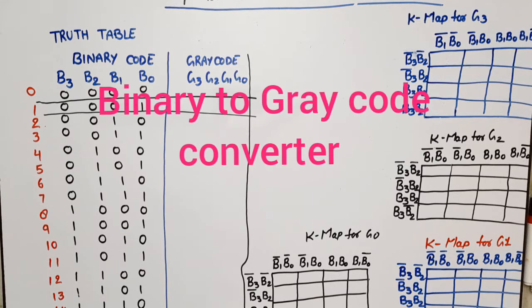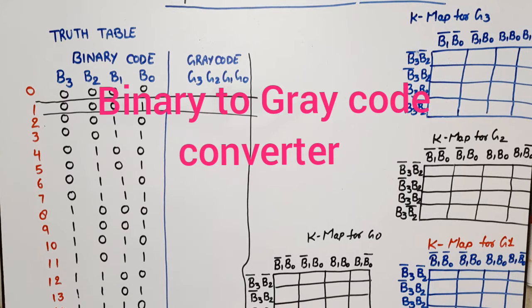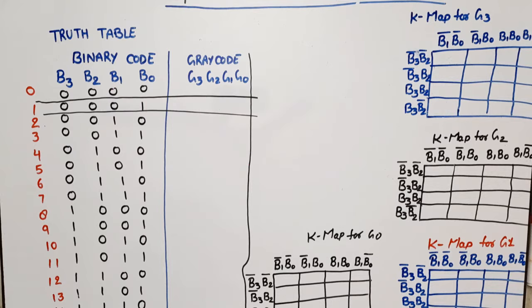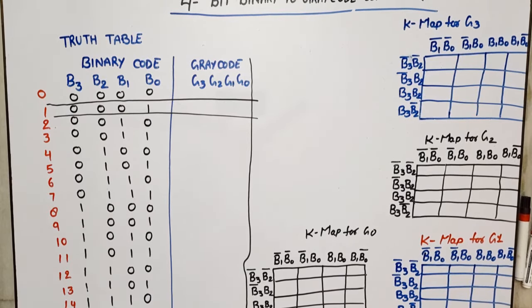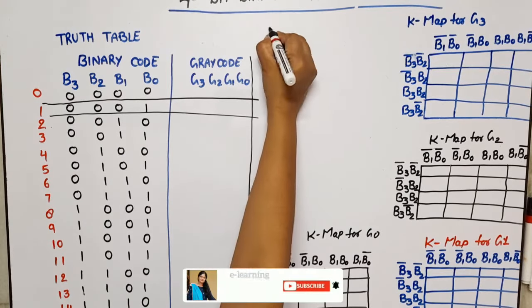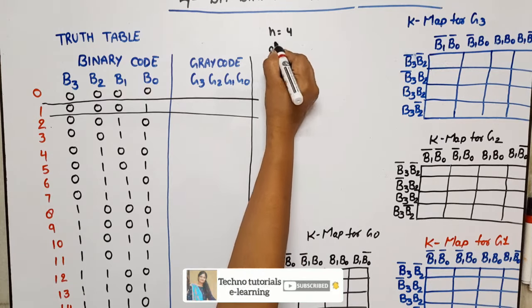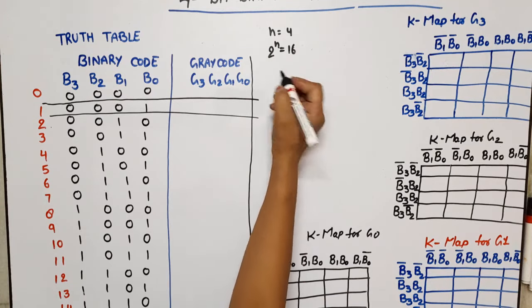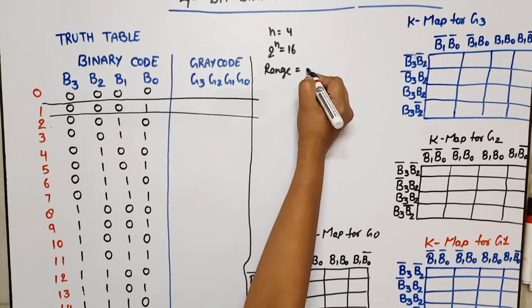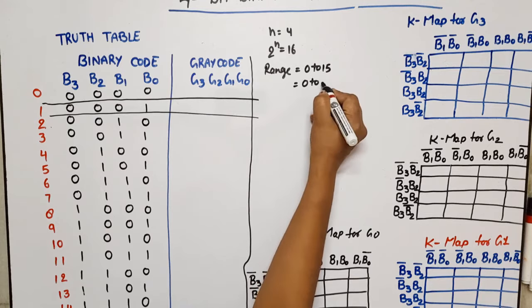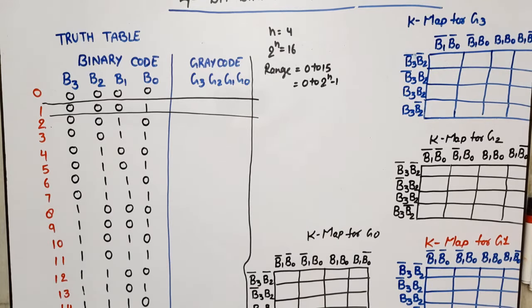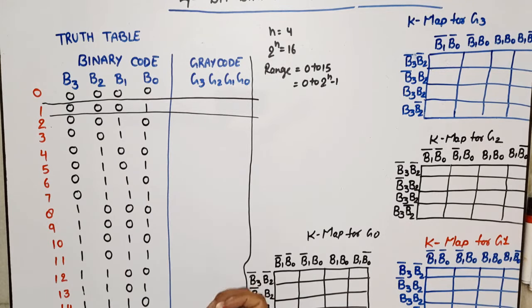In this video lecture on digital electronics and digital system design, I'm going to discuss the 4-bit binary to gray code converter. The 3-bit version is already uploaded, and I'll provide the link in the description box. For a 4-bit converter, the number of bits n equals 4, so there are 2 to the power of 4 equals 16 possible combinations, with a range of 0 to 15.